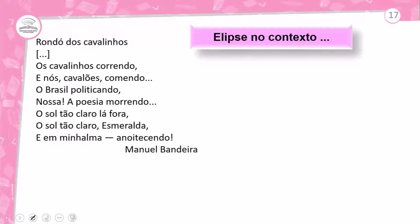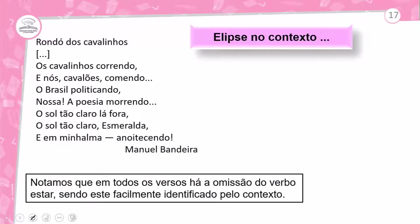A elipse no contexto — poesia de Manuel Bandeira, 'Rondó dos Cavalinhos': 'Os cavalinhos correndo e nós cavalões comendo. O Brasil politicando. Nossa poesia morrendo. O sol tão claro lá fora. O sol tão claro esmeralda. E em minha alma anoitecendo.' Em todos os versos há a omissão do verbo 'estar', facilmente identificado pelo contexto: 'os cavalinhos estão correndo', 'nós estamos comendo'. A ausência, a omissão do verbo em todos os versos.